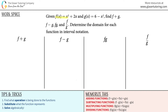Given f of x equals x squared plus 2x, and g of x equals 6 minus x squared, find f plus g, f minus g, f times g, and f divided by g. For each one, we have to determine the domain in interval notation.